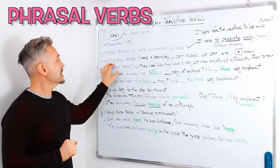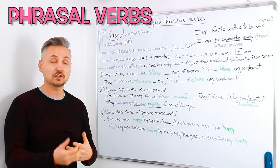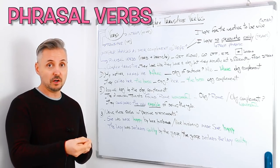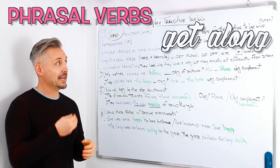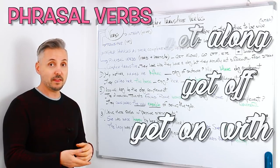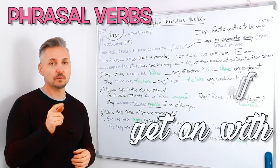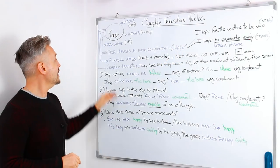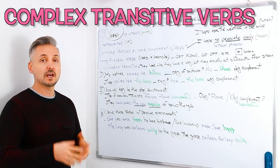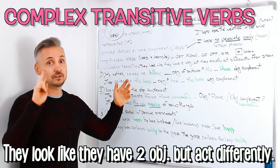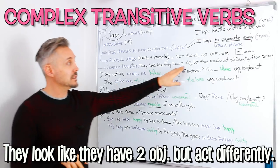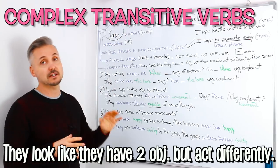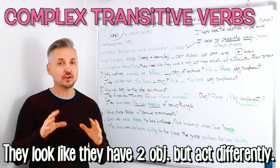Then we have verbs that can be phrasal verbs — a verb plus a particle, just like get along, get off, get on with, etc. If you wish to watch a lesson on this, you may click here. And then we have the complex transitive verbs. Complex transitive verbs look like they have two objects, but they actually act differently from ditransitive verbs. Let me show you how.